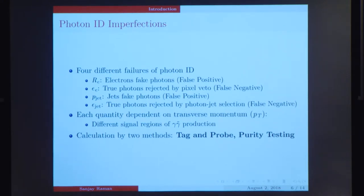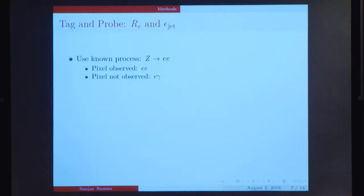We calculated these four quantities by two main methods: the tag and probe method and the purity test method. For tag and probe, we can use it to determine the electron fake rate and the jet efficiency. The basic idea behind tag and probe involves the use of the known process where a Z boson decays into an electron and a positron, Z to e plus e minus. We can take one of these electrons and place a tight selection on it to ensure that it really is an electron, and then we can look at the properties of the other one to see whether or not it passes the electron photon ID. If it leaves a pixel, we have an electron electron final state and there's no fake. But if it doesn't leave a pixel, we interpret it as a photon, we have an electron photon final state, and there is a fake. So the electron photon fake rate is simply the ratio of the number of electron photons over the number of electron electrons.